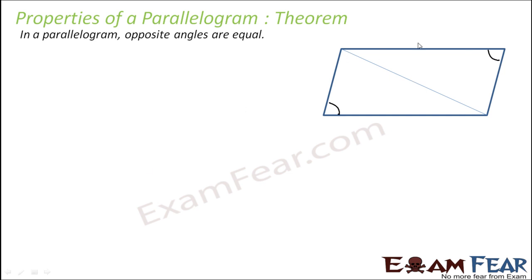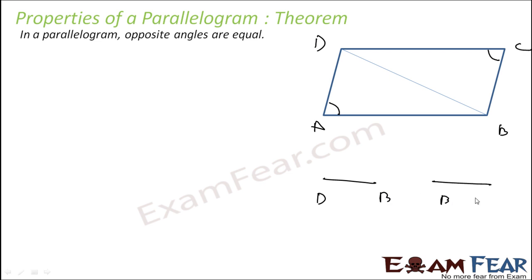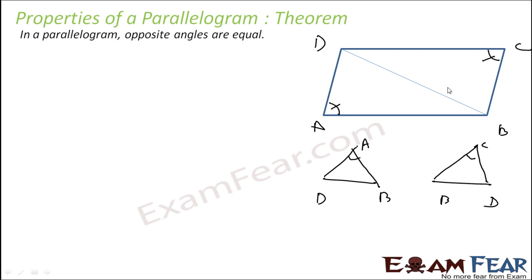So we have proved that these two triangles are congruent. If that is the case, this angle has to be equal to this angle. So opposite angles are equal.